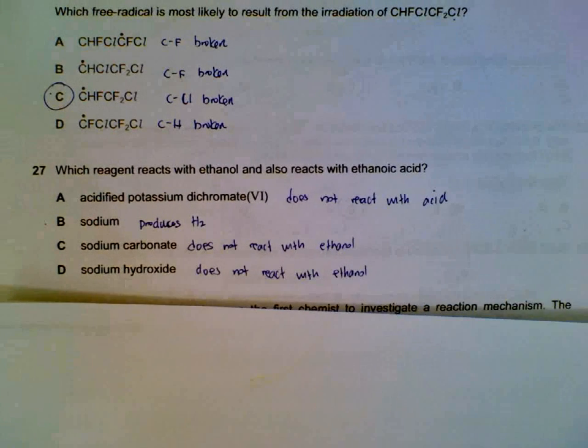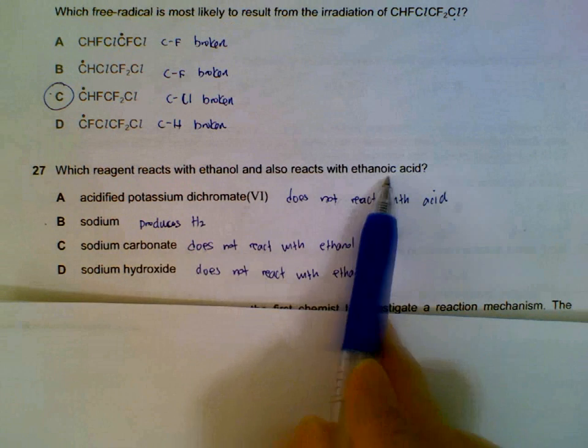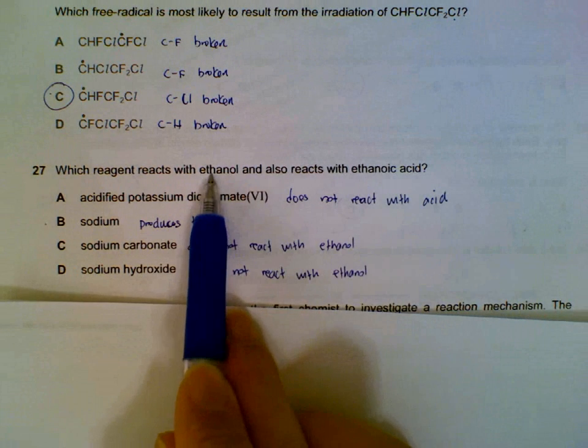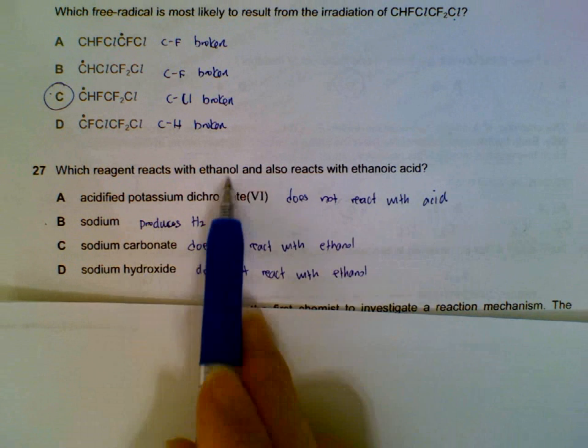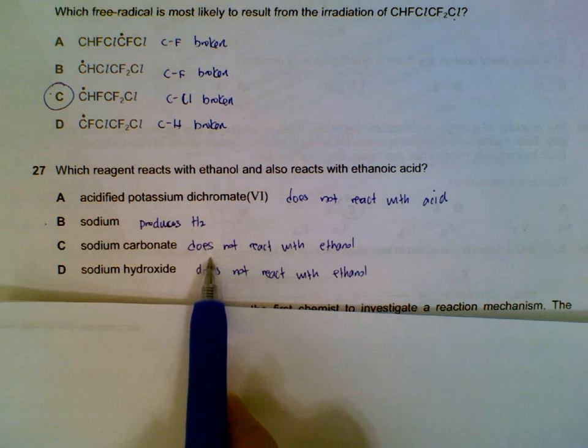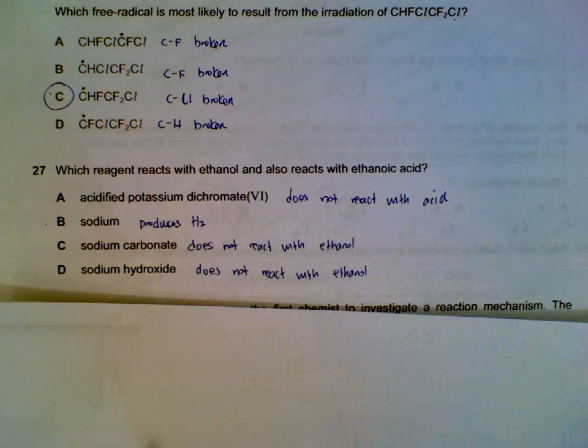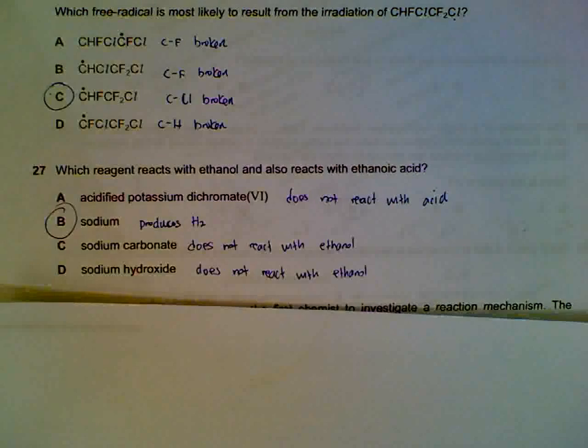Which one reacts with both ethanol and ethanoic acid? Dichromate doesn't react with the acid, it oxidizes the ethanol. Sodium reacts with both to produce hydrogen gas. Carbonate doesn't react with your ethanol. Sodium hydroxide doesn't react with ethanol. So sodium is the one that reacts with both.